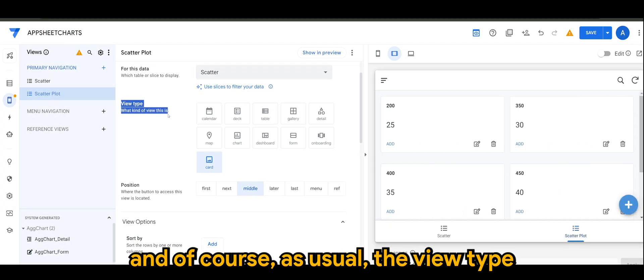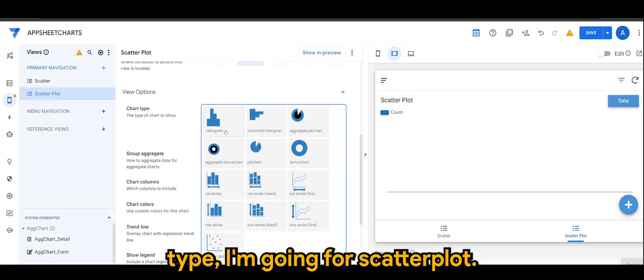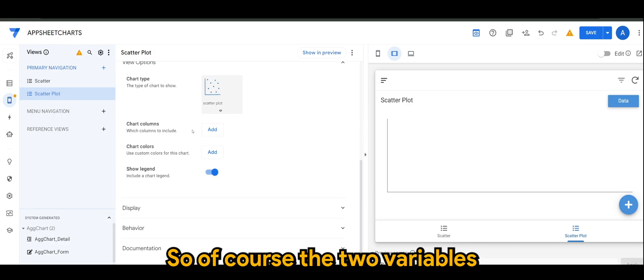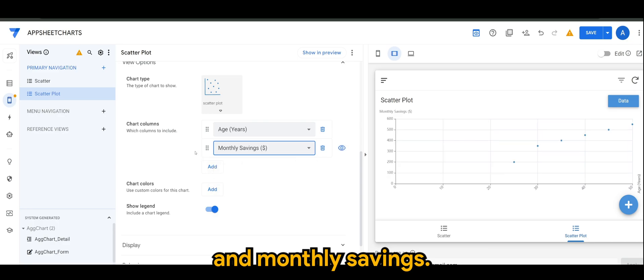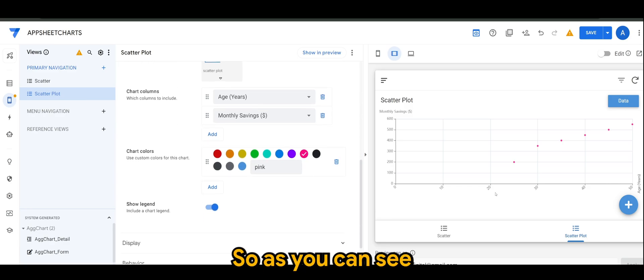And of course, as usual, the view type we're going for chart. And chart type I'm going for scatter plot. The two variables that we are adding in our scatter plot is definitely the age and monthly savings. Let's put it to ping for now.